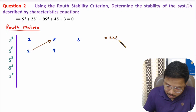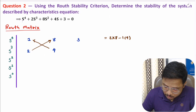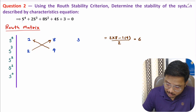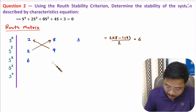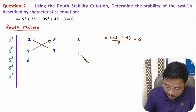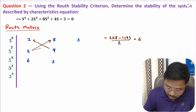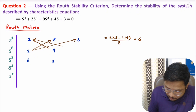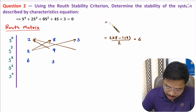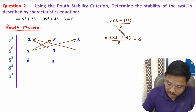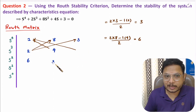For the s² row first element: (2×8 − 1×4) divided by 2 = (16−4)/2 = 12/2 = 6. For the second element: (2×3 − 1×0) divided by 2; the 2s cancel, giving 3. So since the element in the s³ row is 0, we can directly place 3 here without needing full calculation.